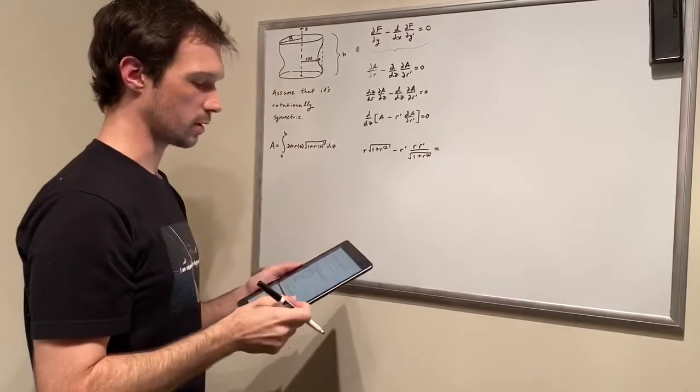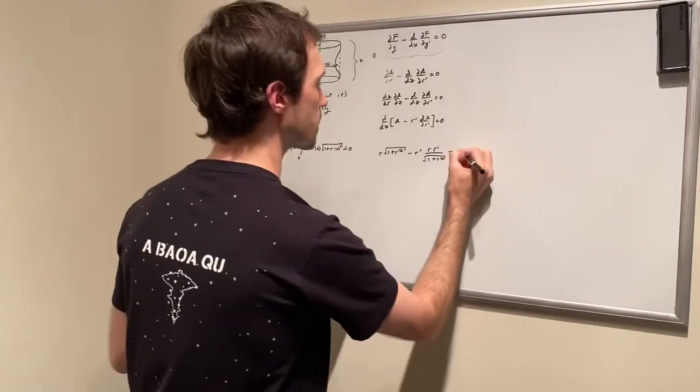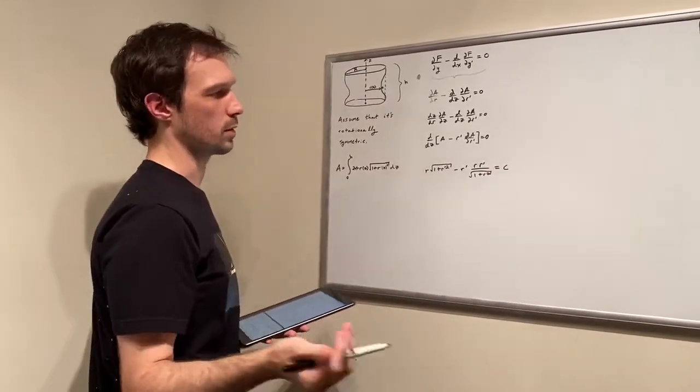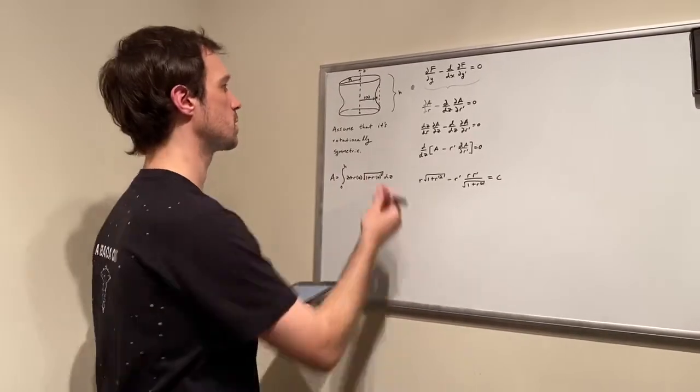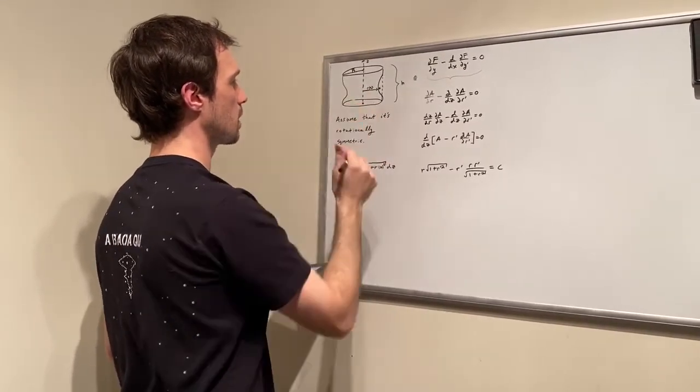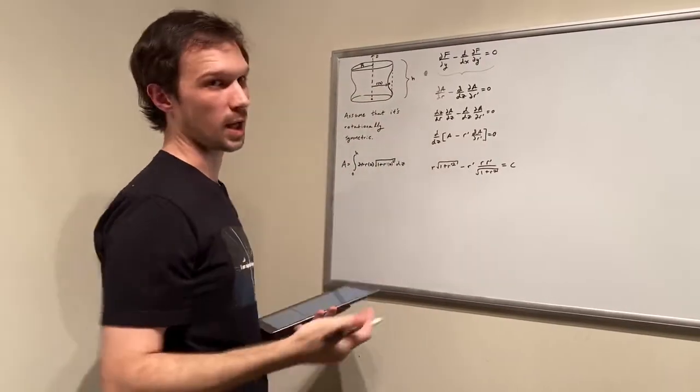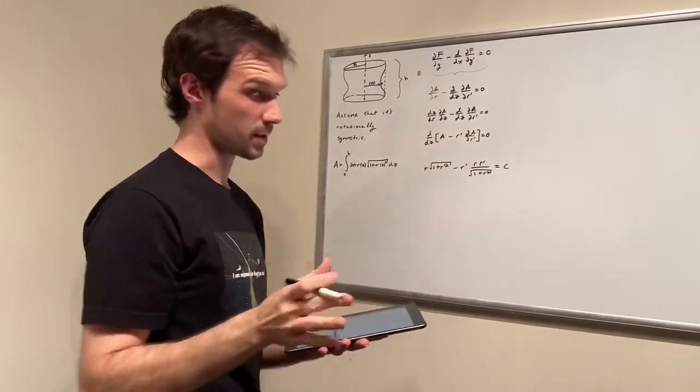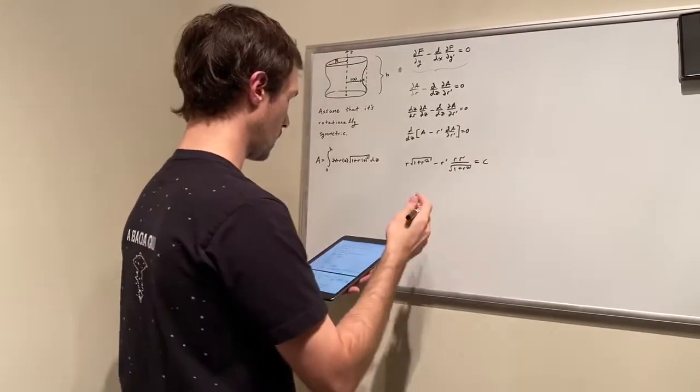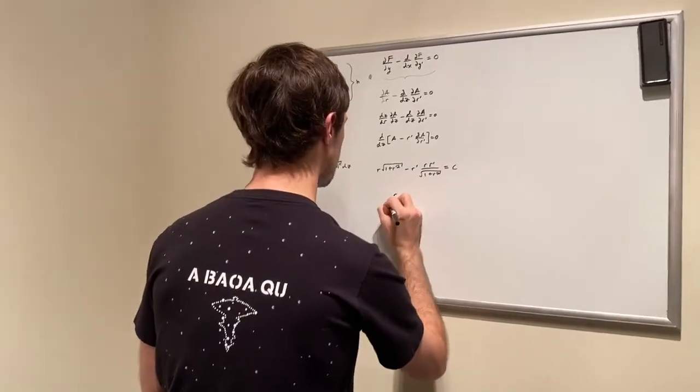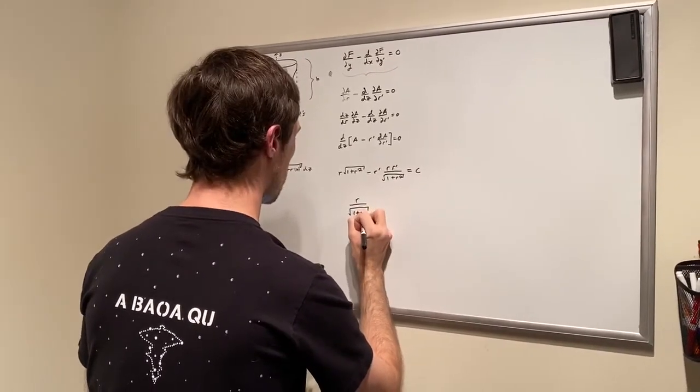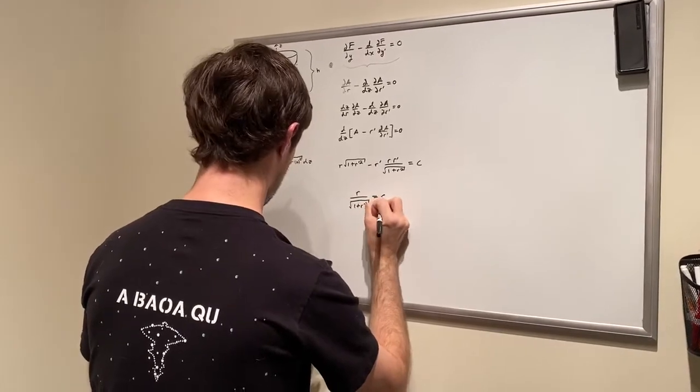Now we could set it equal to zero but in our case let's set it equal to a constant. If we have a constant in our final answer what we can do is we can use that to solve the initial conditions. So here it needs to be a radius R at Z is equal to zero and Z is equal to H. But those are just details that doesn't really matter too much. So if we simplify this right here a little bit we get something that looks like this. R over square root of 1 plus R prime squared is equal to C.